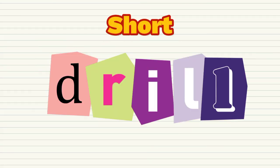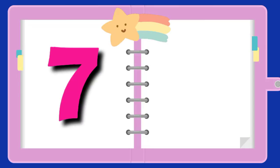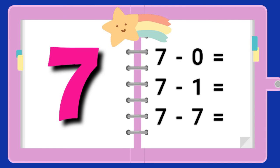Now, let's try a short drill. Let's have number 7. Let us subtract 0, 1, and 7 from 7. 7 minus 0 is 7. 7 minus 1 equals 6. 7 minus 7 equals 0.